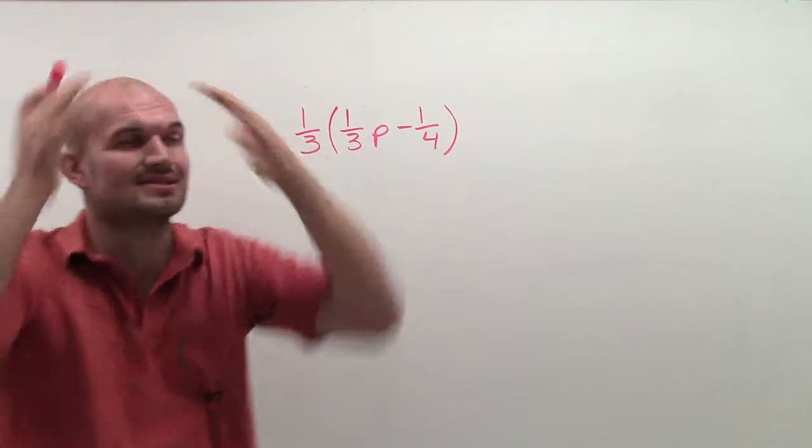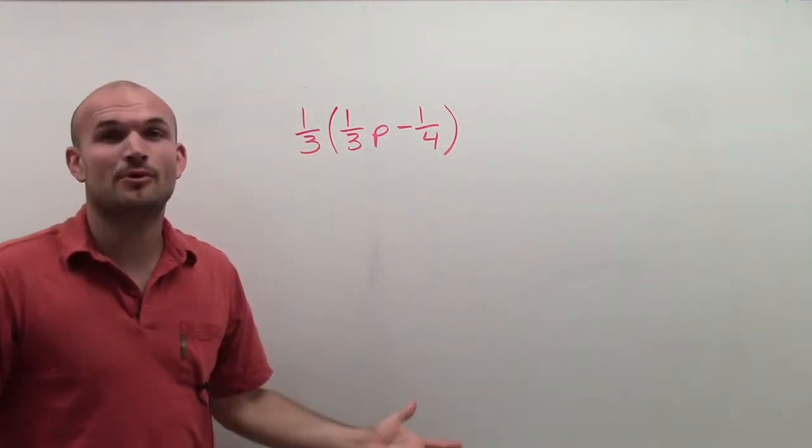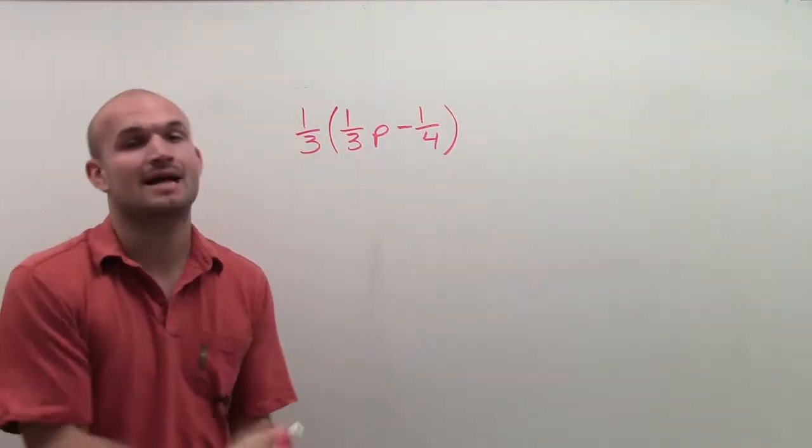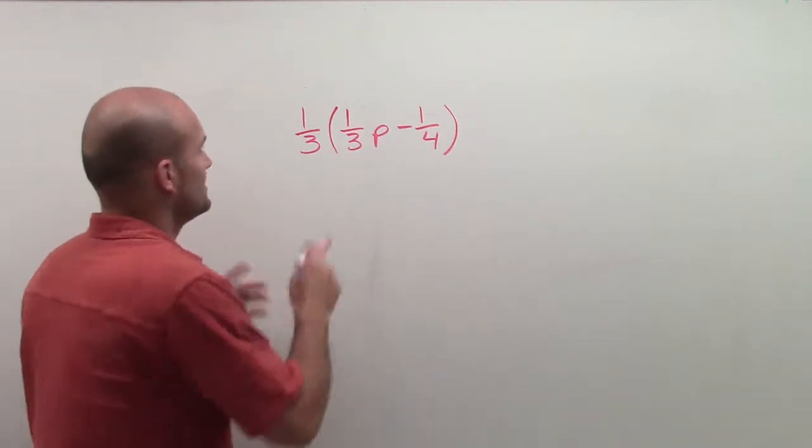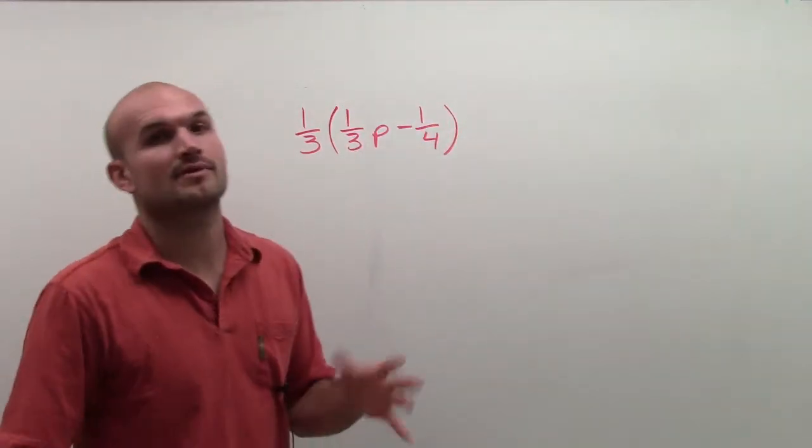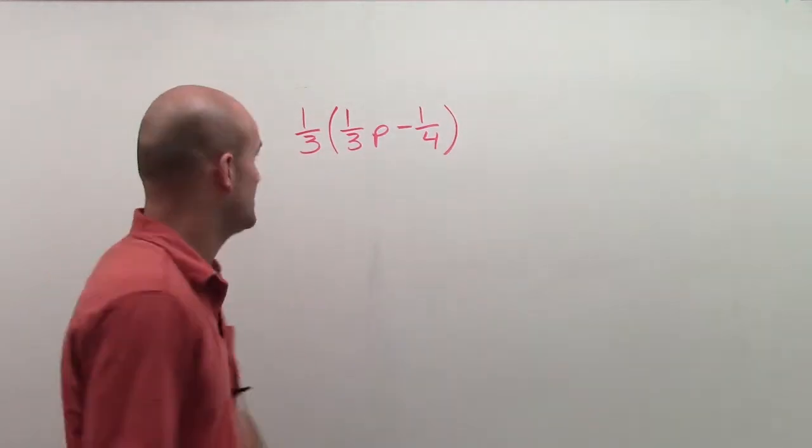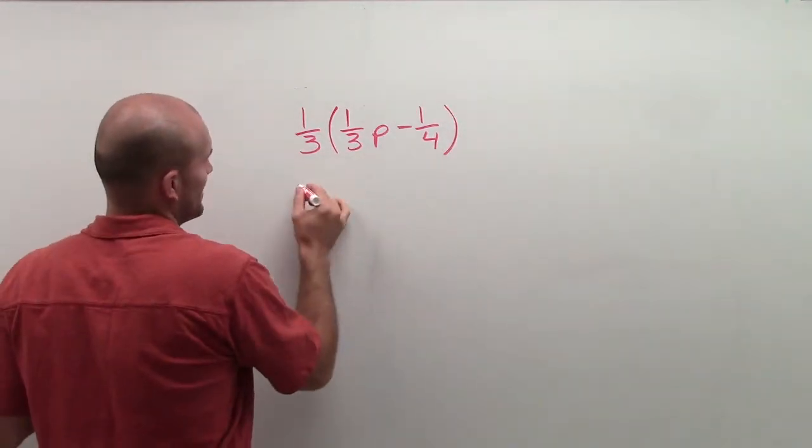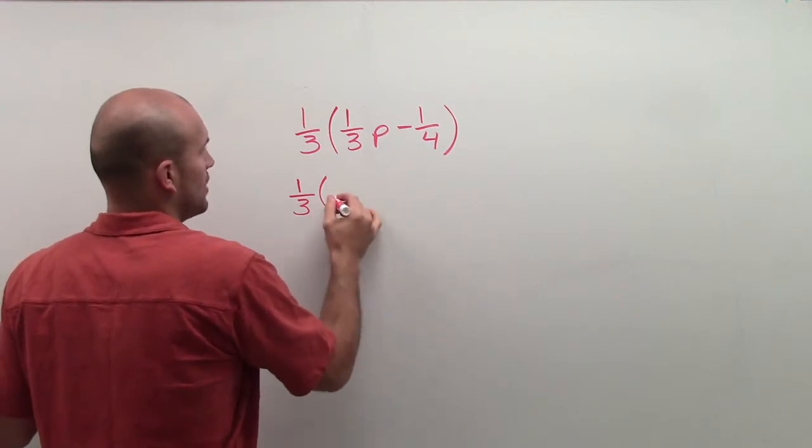No, not fractions! So hopefully by this point we remember the distributive property and we got it. We're like 'okay, I know I need to multiply this times this and one-third times negative one-fourth,' but then again I'm lost. So let's just write that out how we would do it, just like with anything else.